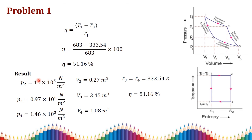To summarize: the PV and TS diagrams have been drawn. Pressures p1 (given), p2, p3, and p4 have been determined. Volume v1 was given; v2, v3, and v4 were calculated. Temperature t1 (given) equals t2; t3 equals t4 = 333.54 K. The thermal efficiency of the Carnot cycle is 51.16%.